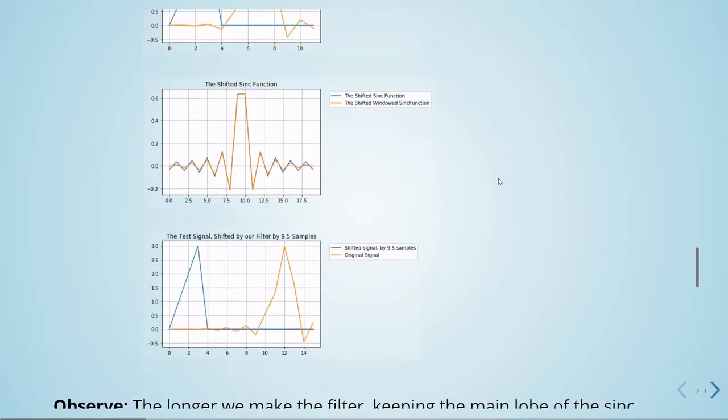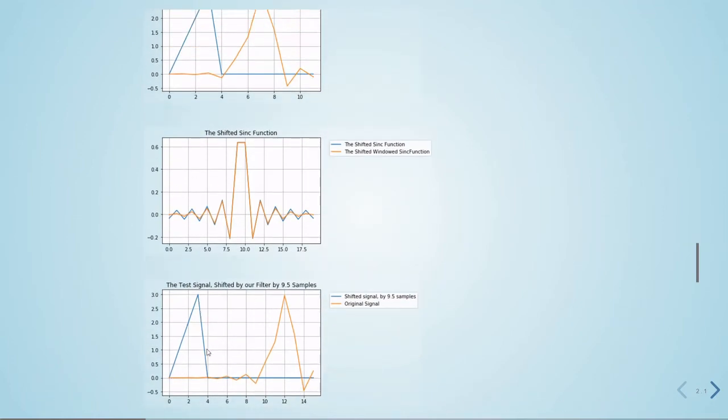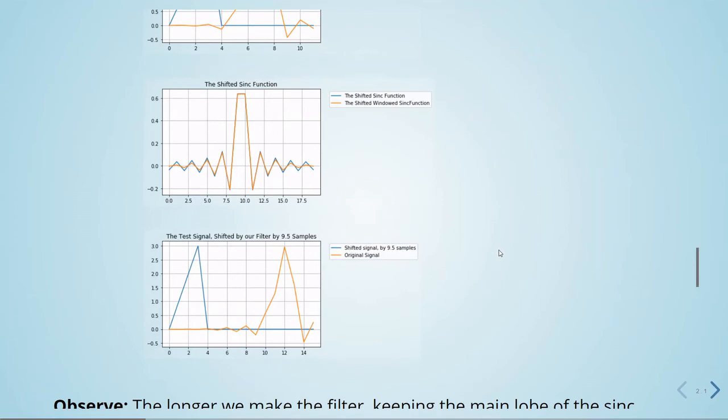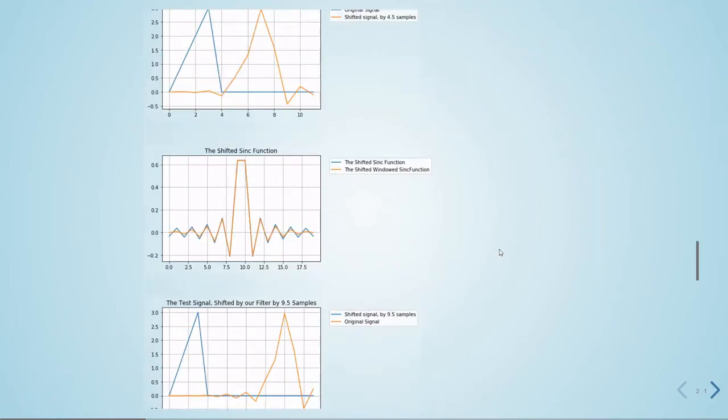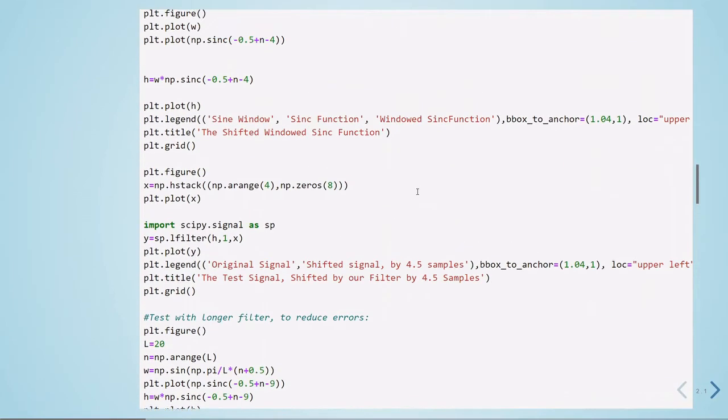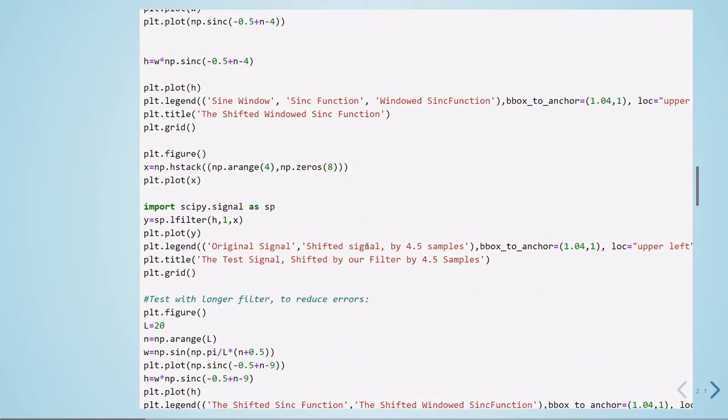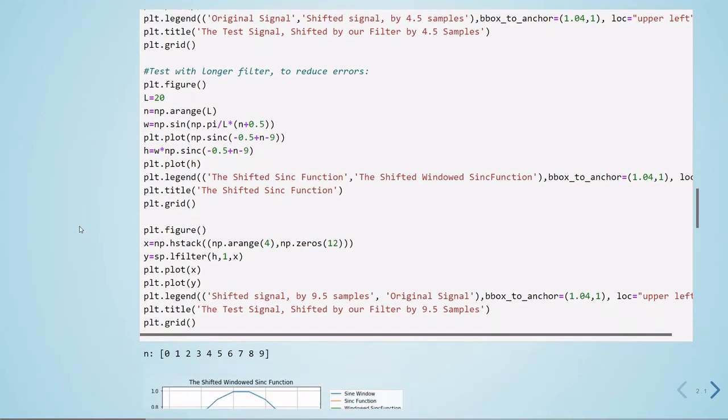So this is our test signal. And now we are shifting by 9.5 samples. So it's just 9 from this n0, and 0.5 is the D, our delay.